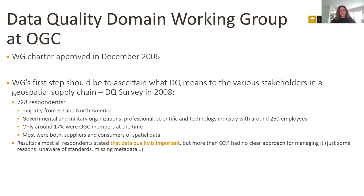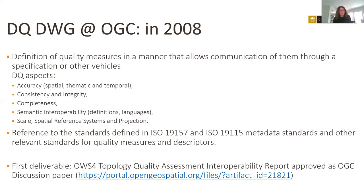The survey result in summary was that almost everybody stated data quality is important, but 60% indicated they had no idea how to manage it. You might think that since 2008 this must have changed, but I'm not so optimistic — I think the percentage is very similar today, maybe even slightly higher. The main mission of the group when established was to help provide guidance in implementing quality control in organizations. At the time, data quality standards were defining fundamental elements such as accuracy, consistency, and integrity.